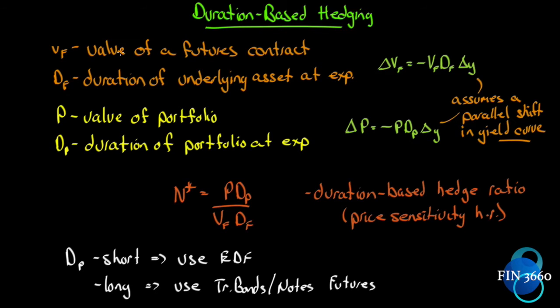That would be the hedge ratio from chapter 3, right? What about this duration business? DF was the duration of the underlying asset of the futures contract, which means DP is the duration of the portfolio at expiration. From our calculation of duration, we know that to calculate the change in price of a portfolio is simply negative the price of the portfolio times the duration of the portfolio times the change in interest rates.